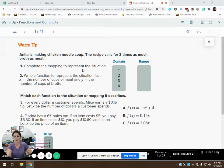I don't know if you remember how to complete a mapping, but this says Anita is making chicken noodle soup. The recipe calls for three times as much broth as meat. So we're going to complete the mapping to represent the situation. Let's think about that.